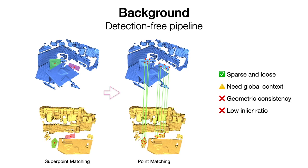As the superpoint matching is sparse and loose, it needs more global context and geometric constraints. Previous methods use Transformer to capture global context, but overlook the global geometric structure of the point clouds. This causes inaccurate superpoint matching and low inlier ratio, so these methods still rely on RANSAC for registration.